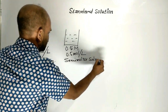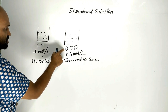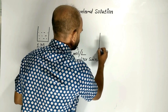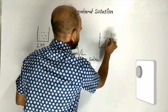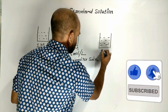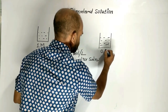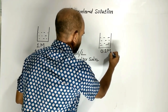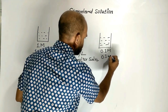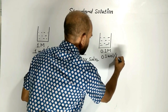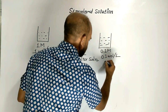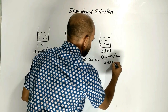So this is the solution. Its concentration is known. Suppose another solution of standard substance. Its concentration is 0.1 molar, meaning 0.1 mole per liter. The name of this solution is decimolar solution.